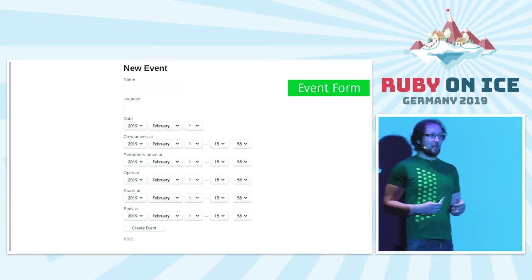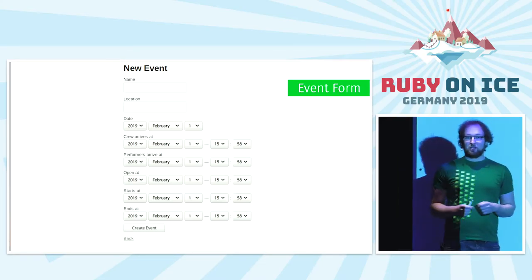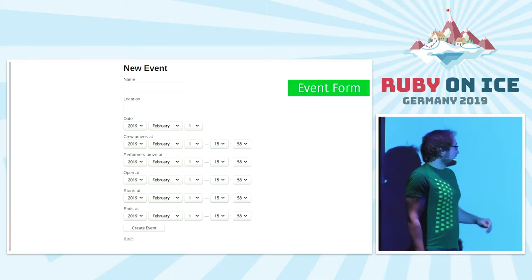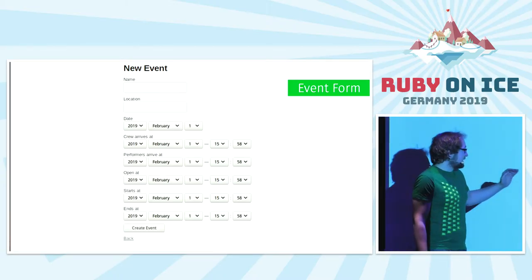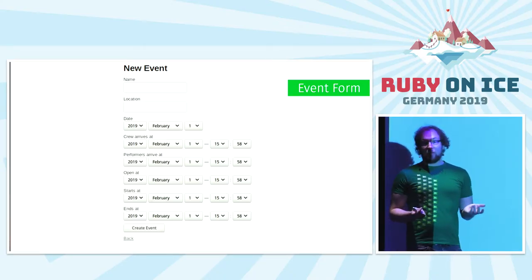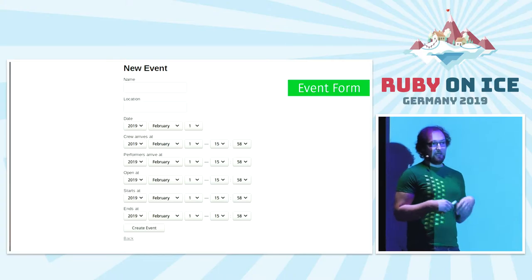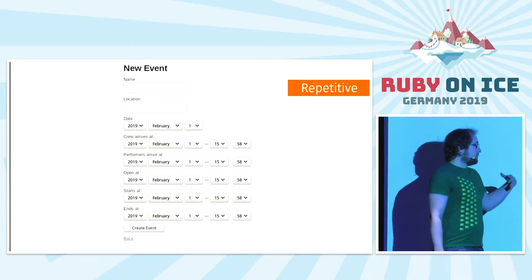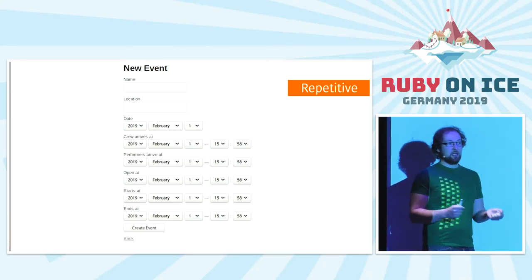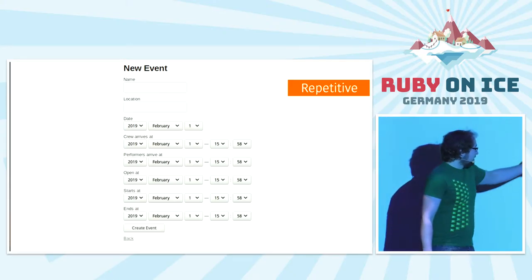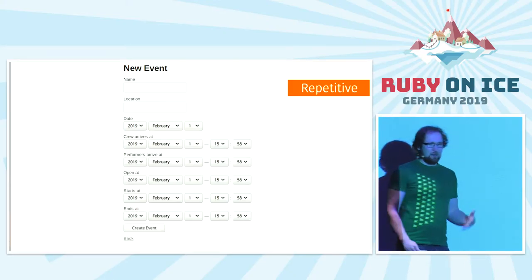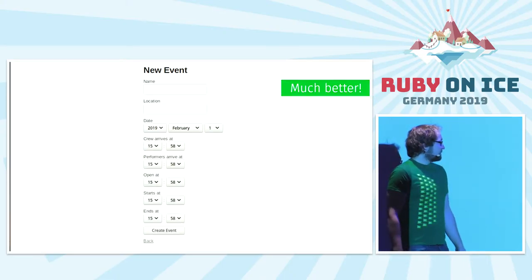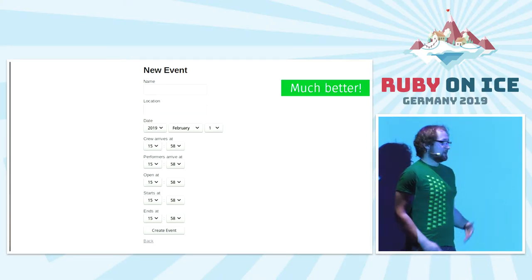So imagine we have a problem. We want to build a new application to manage events. An event has a name, a location, a date, and then at some time the crew arrives, and then performers arrive. However, our events are just user groups, so they only ever take place one day at a time. We want them to be date times so they can be efficiently compared in the database with other dates, and we have to enter the date all the time. This sucks — we want to be user-friendly. So this is obviously much better: we just enter the date once, and then we enter all the times.